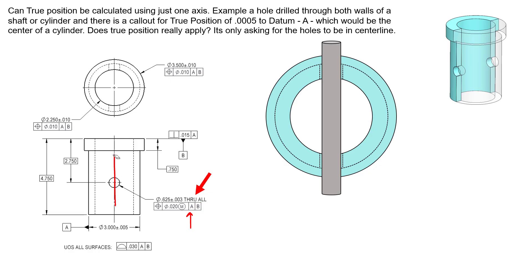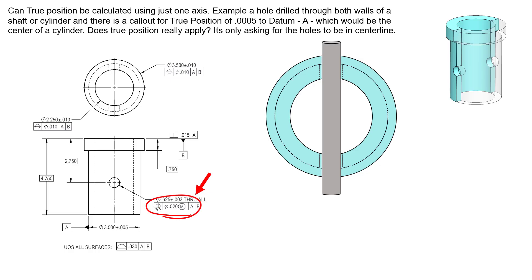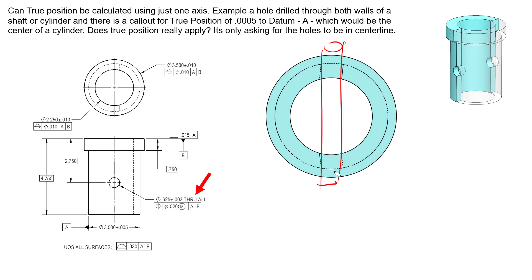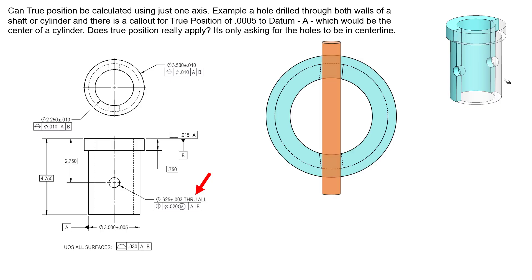The feature control frame also references datum feature B to control the location of the axis along datum axis A. Datum B doesn't have to be included — without it, nothing controls the up-and-down location along datum axis A, leaving the drawing underdefined. So we include datum B in the feature control frame. To check this position callout, we need to consider the UAME — the Unrelated Actual Mating Envelope — which expands inside both cylinders outward until it can expand no further.